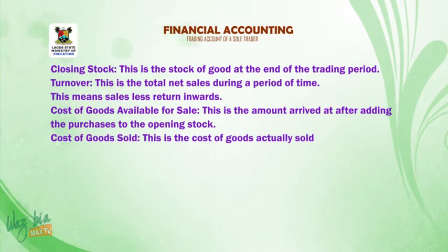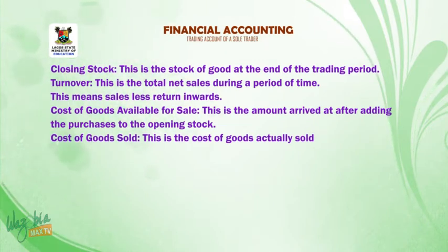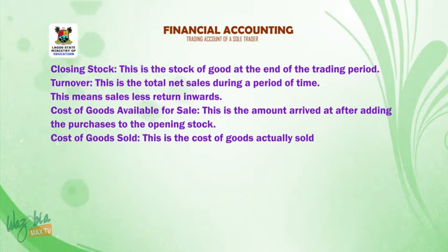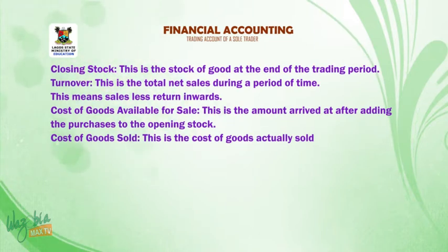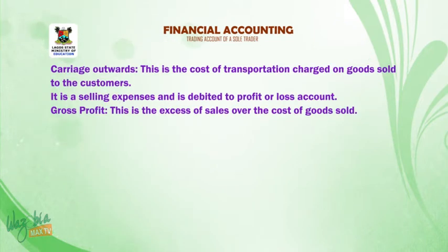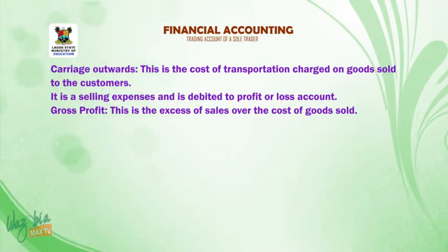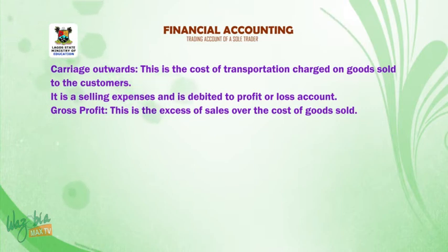Turnover: this is the total net sales during a period of time — that is, sales less return inwards. Cost of goods available for sale: this is the amount arrived at after adding purchases to the opening stock. Cost of goods sold: this is the cost of goods actually sold. Carriage outwards: this is the cost of transportation charged on goods sold to customers — it is a selling expense and is debited to the profit or loss account.